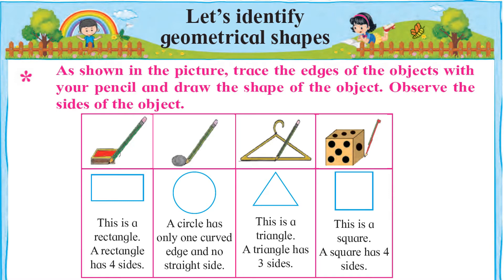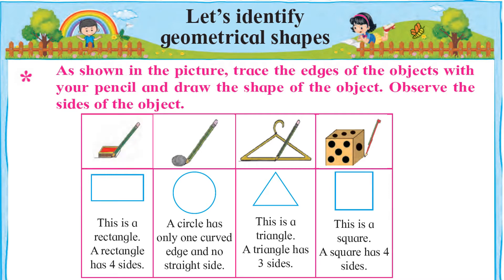Tayyar hone wali shakloon ke naam padho. To chaliye, first object yaani pehli cheez ko dekhte hain — yeh hai matchbox, yaani maachis ki dibbiya. Iske edges yaani kinaaron par pencil pherne par aapko is tarah ka shape yaani shakal banti nazar aayegi. This is a rectangle — is shape ka naam rectangle hai, aur Urdu mein ise Mustatil kehte hain.